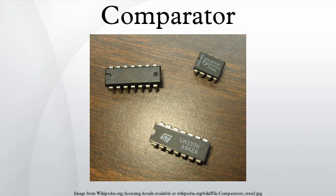Relaxation oscillator: A comparator can be used to build a relaxation oscillator. It uses both positive and negative feedback. The positive feedback is a Schmitt trigger configuration. Alone, the trigger is a bistable multivibrator. However, the slow negative feedback added to the trigger by the RC circuit causes the circuit to oscillate automatically. That is, the addition of the RC circuit turns the hysteretic bistable multivibrator into an astable multivibrator.